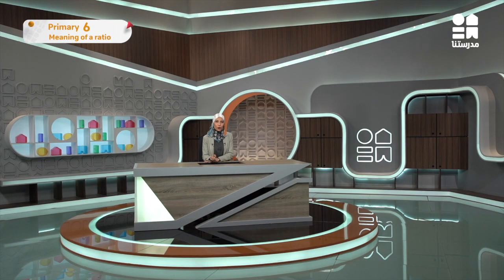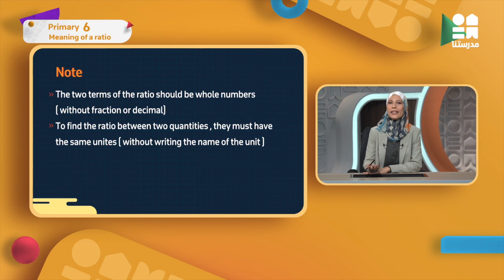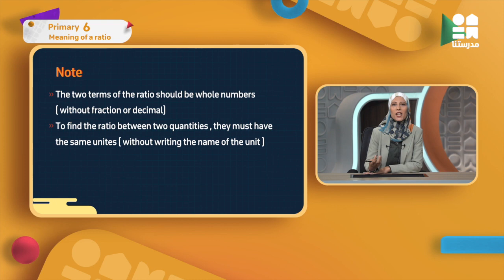Here I have some notes we are going to discuss together. The first note says that the two terms of the ratio should be whole numbers — meaning without a decimal, without a fraction. The numbers I use in my ratio must be whole numbers, like 3, 2, 5, 100, 200.